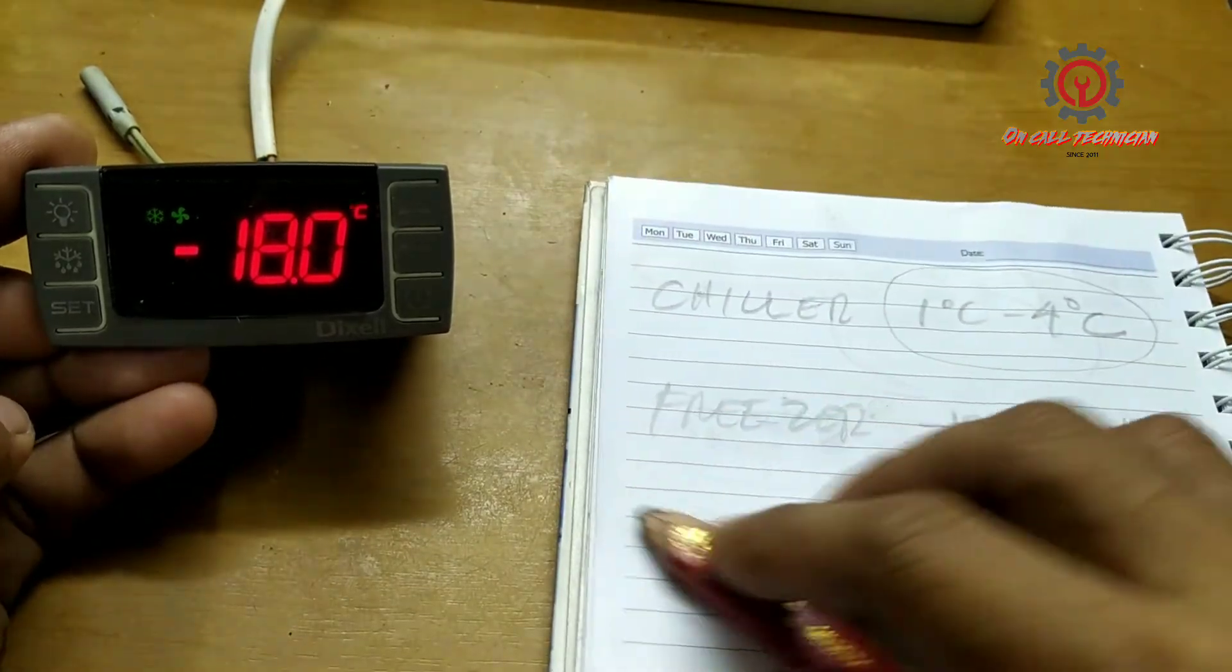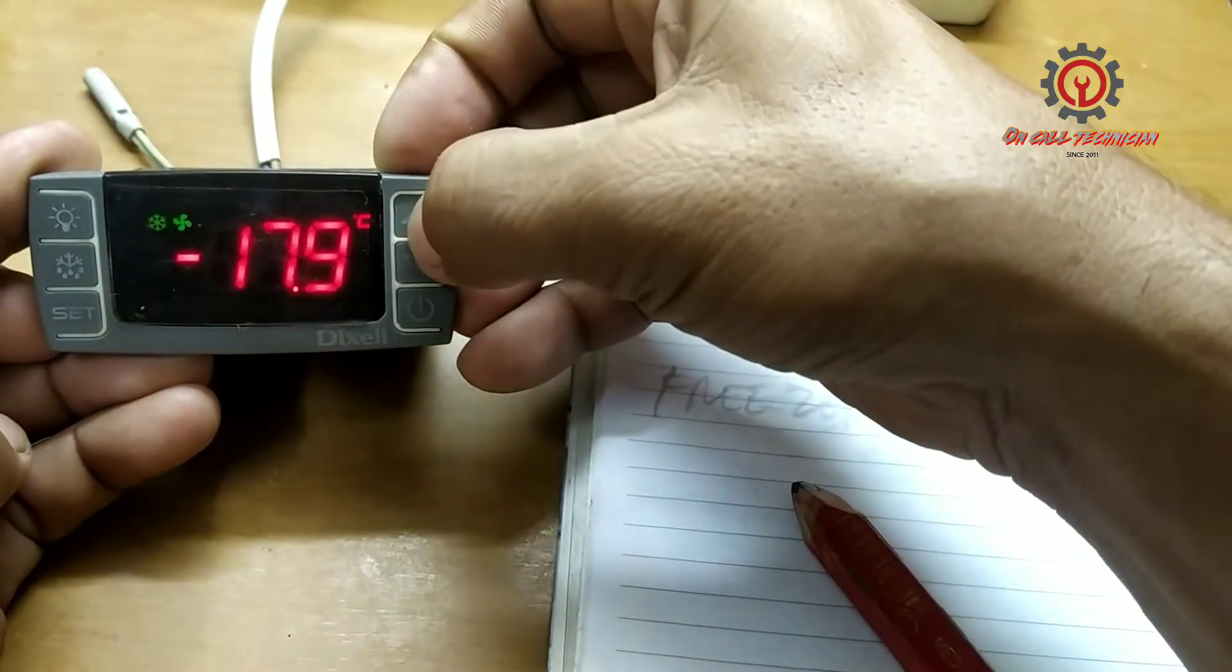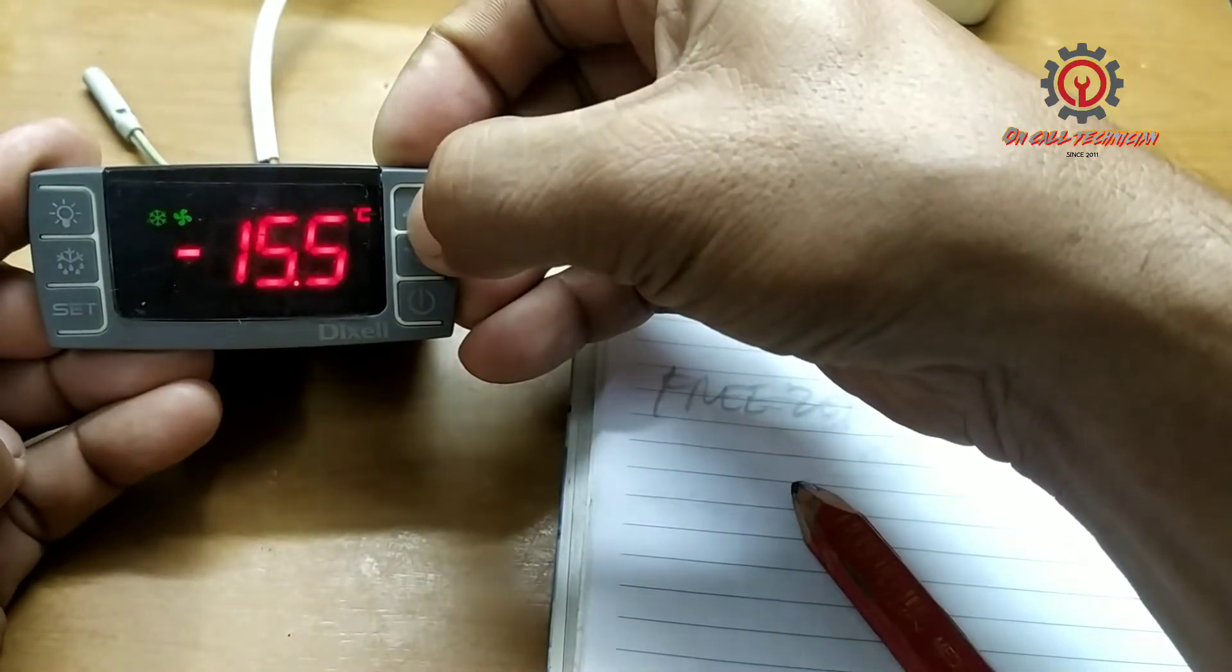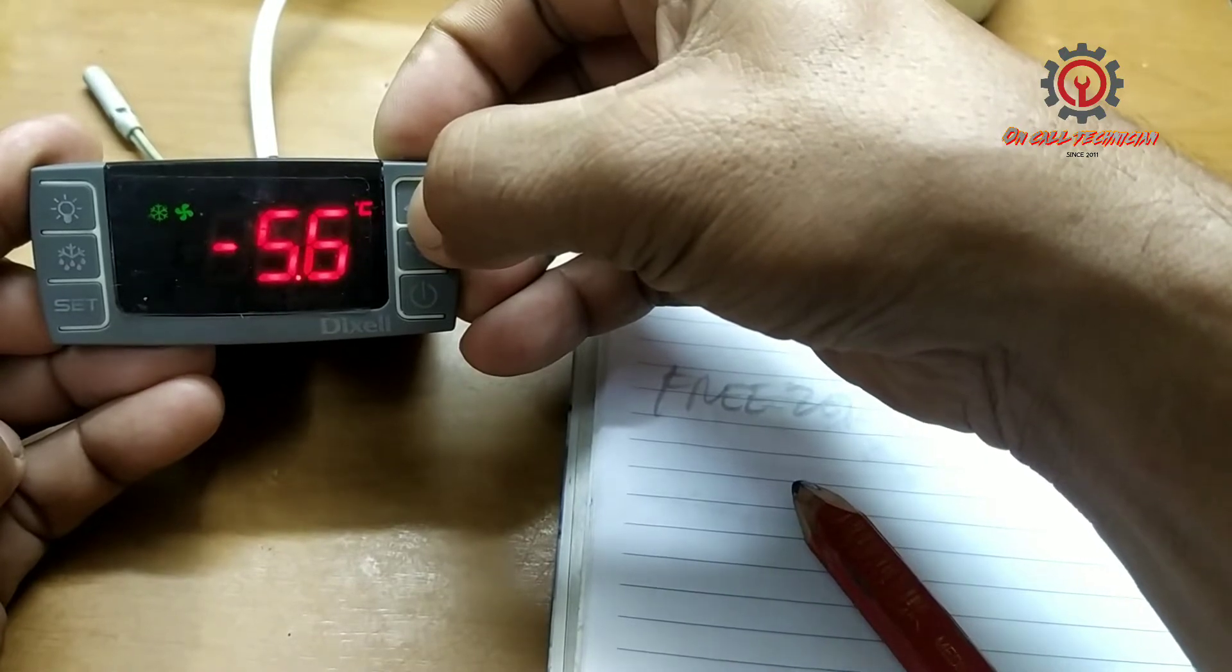Once the degree Celsius is blinking, we can now change that to positive one. To do that, press the arrow up button and let's change negative 18 to positive 1 degree Celsius.